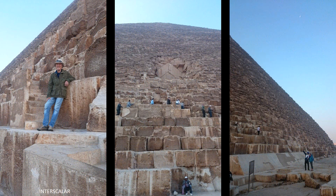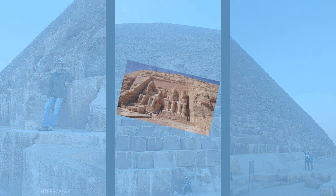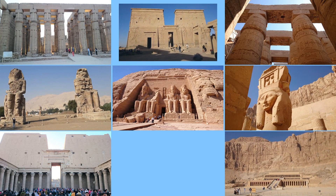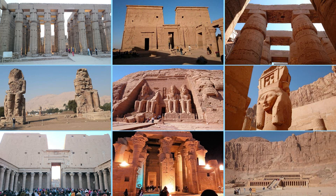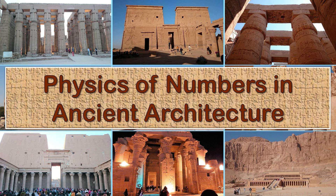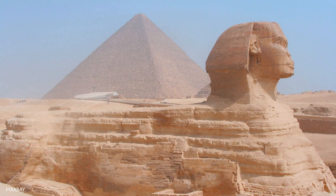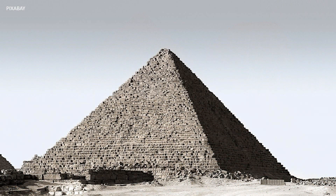Today I invite you to travel with me through time and visit one of the wonders of the ancient world, the Great Pyramid of Giza. This video will be the first of a series dedicated to ancient architecture. Like always, we study the facts from the point of view of the physics of numbers. The Giza Pyramid Complex includes the Great Pyramid of Khufu, the Pyramid of Khafre, and the Pyramid of Menkaure, along with their associated pyramid complexes and the Great Sphinx of Giza.